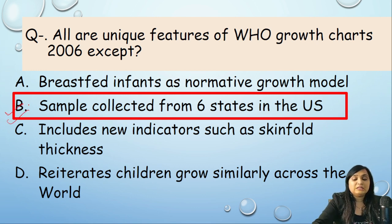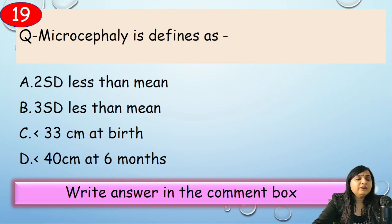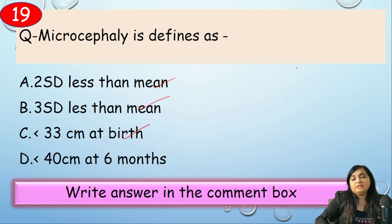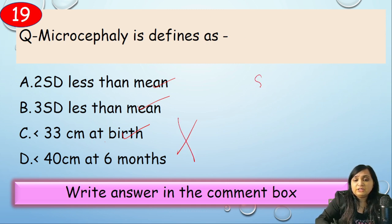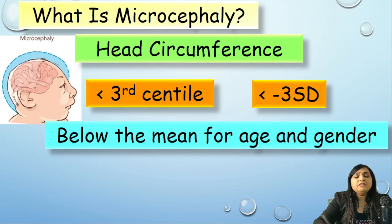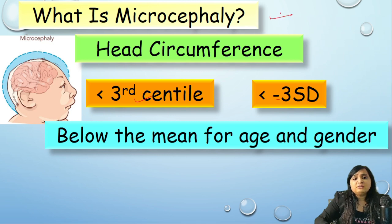Microcephaly is defined as — 2 SD less than mean, 3 SD less than mean, less than 33 cm at birth, or less than 40 cm at birth? Options C and D based on absolute values are incorrect since definitions use SD. Correct answer: 3 SD below the mean for age and gender is defined as microcephaly for head circumference.